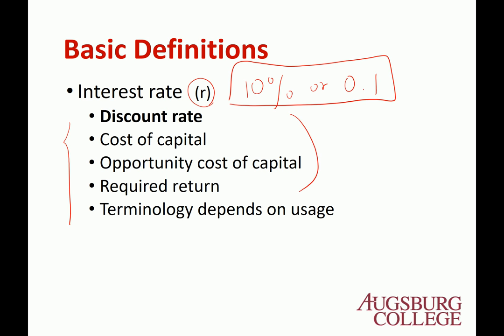This terminology depends on usage, and we'll learn most of them in future chapters. For getting future value, it's basically the interest rate — the interest we get each year, which is 10%.